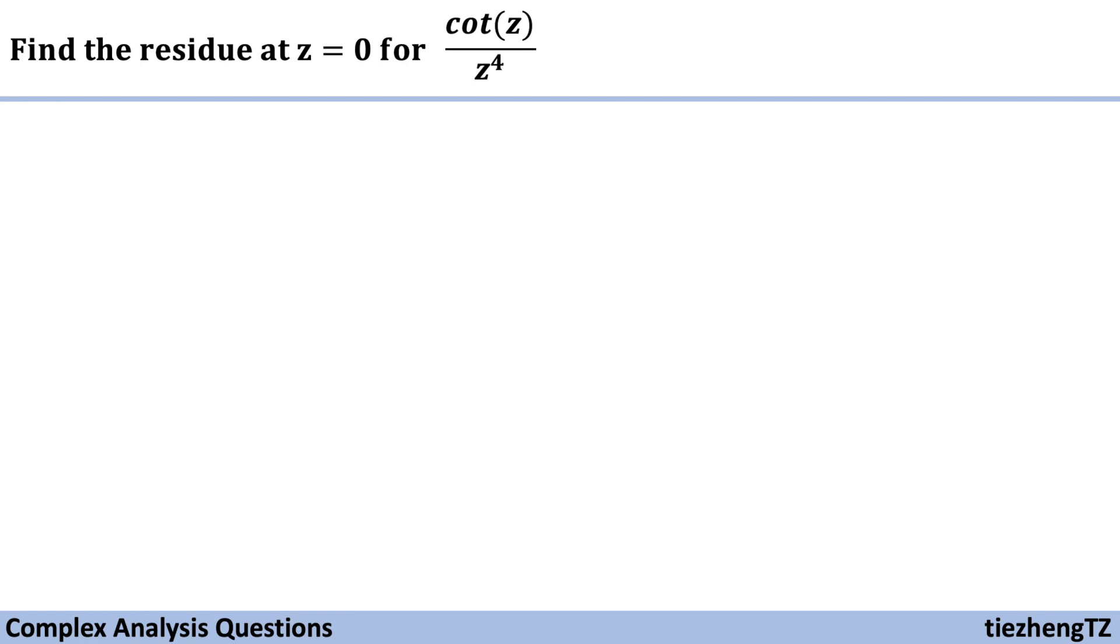We have already introduced many example questions about the concept of residue. If the complex number is the coefficient of 1 over z minus z0 in the expansion form, then we can say the complex number is the residue of the function f at that isolated singular point z0.